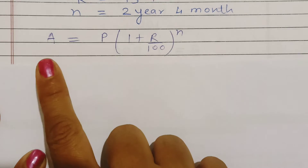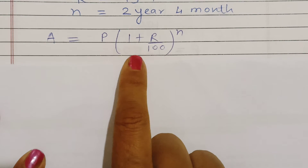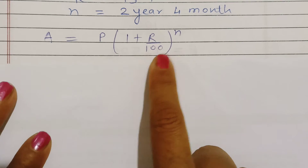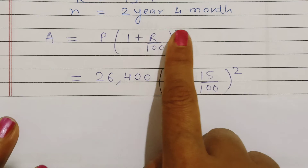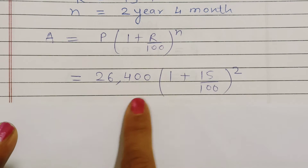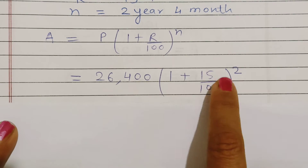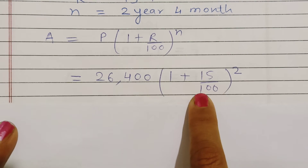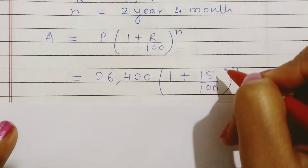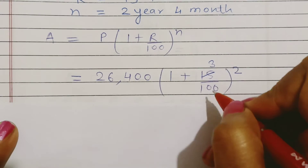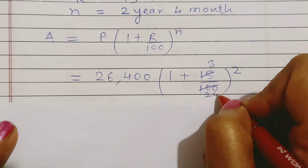Compound interest का formula है: Amount = P × (1 + r/100)^n. P पता है, r पता है और n पता है। हमने सबकी value यहाँ पर रखी — 15 और 100। इसको simplest form में कर सकते हैं: 15/100 → 3/20 (since 15÷5=3 and 100÷5=20)।